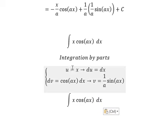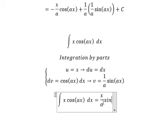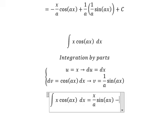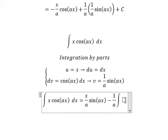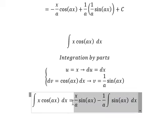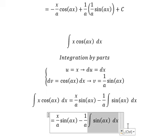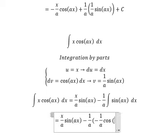So we have u multiplied by v minus the integral of v multiplied by du. We have the integration of sine ax dx. The integration of this one is negative 1 over a cosine ax.